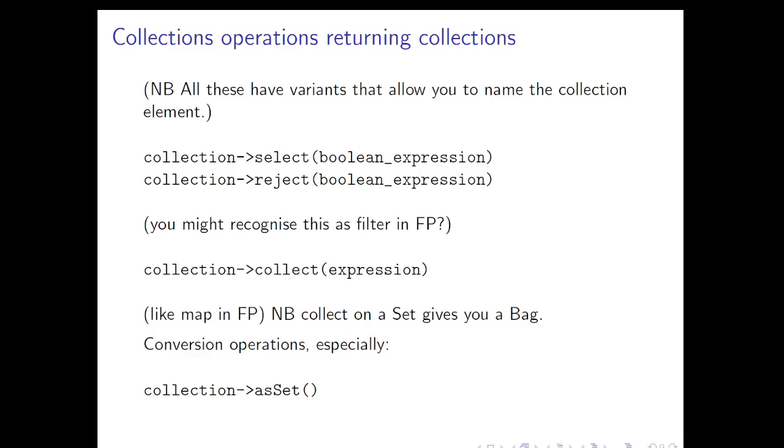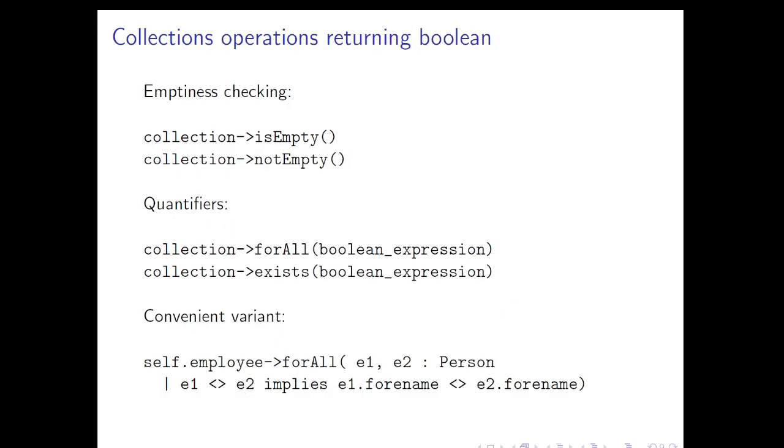You can convert between types of collections in the kind of obvious way. The commonest case of that is that you might want to take a collection, for example a bag, and you might want to look at it as a set, in other words deduplicated. We can do emptiness checking positively or negatively, pretty much as you'd expect. And we can use quantifiers, and they work like this: forAll and exists. There are various syntactic variants of these which you'll find in the standard. I'm just giving the simplest ones here. Here's one convenient variant, though, if we want to be able to bind to instances of a collection.